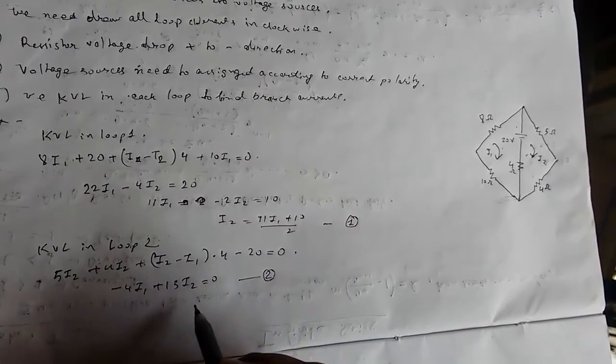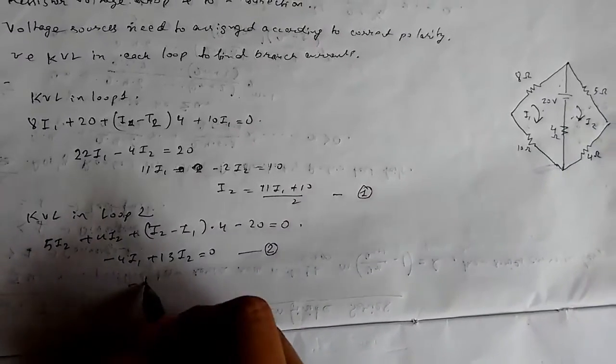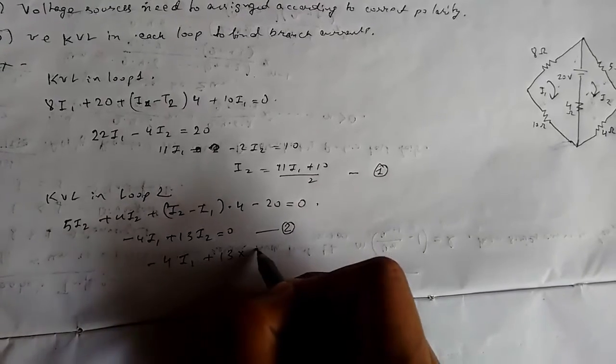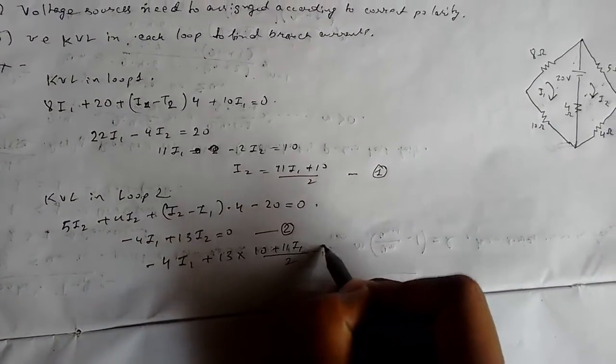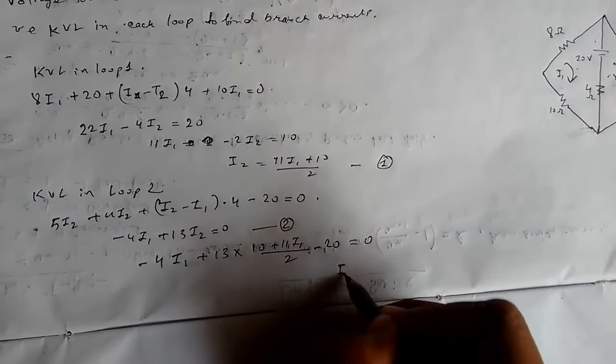Now we'll substitute I2 in equation 2. We get -4I1 + 13 times (10 + 11I1)/2 equals 20.